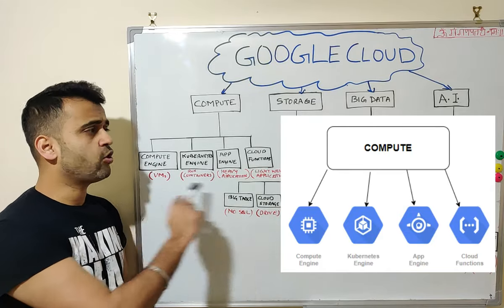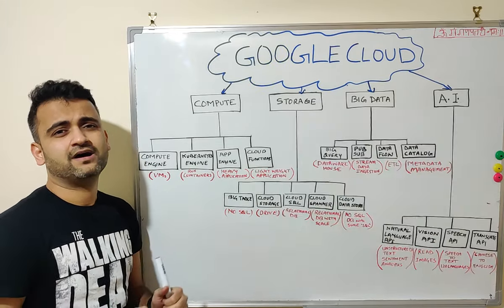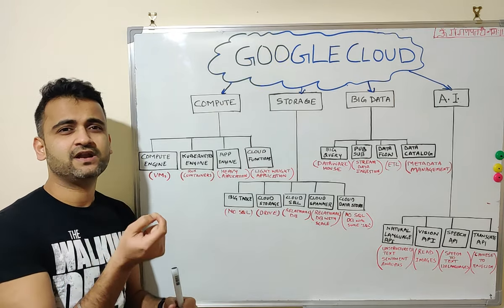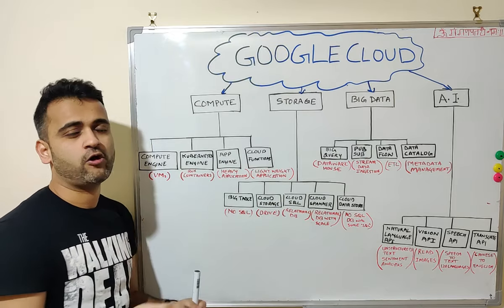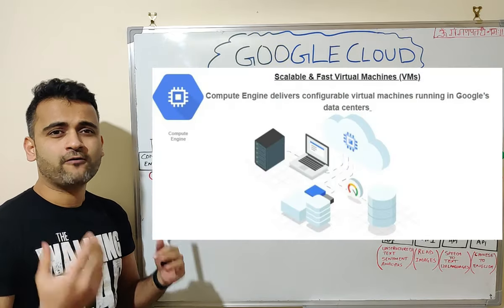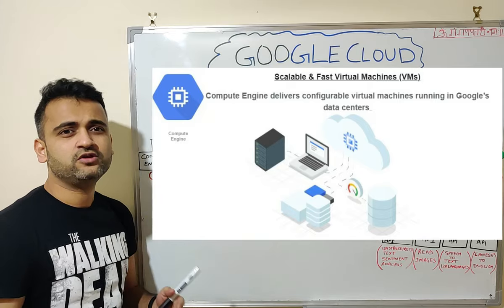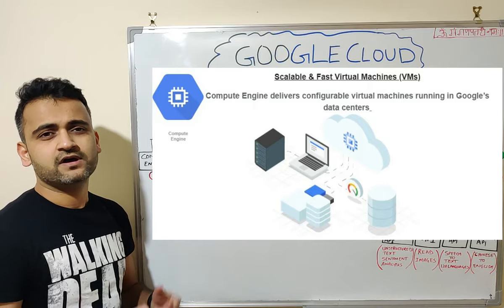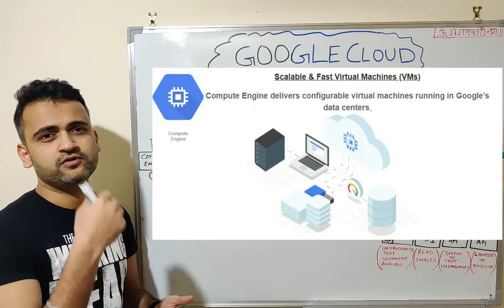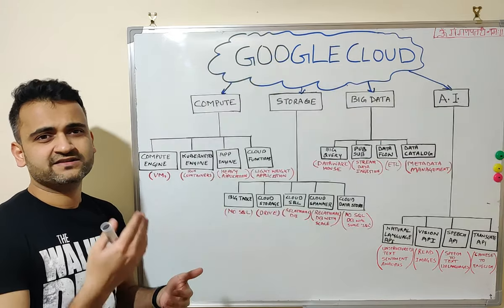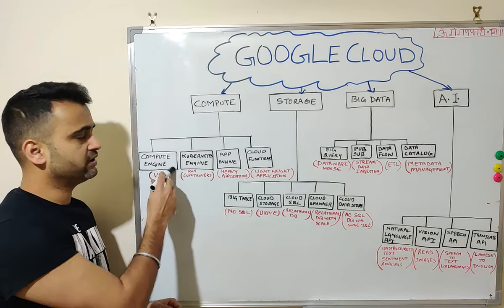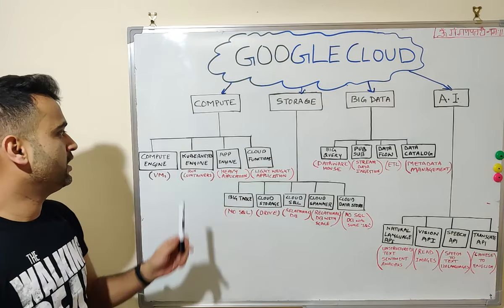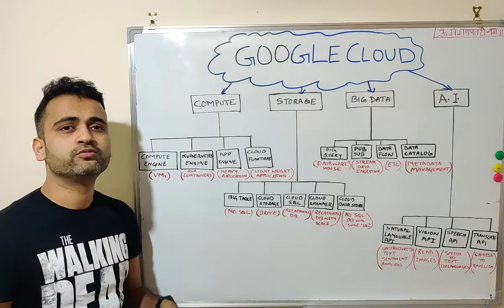Under Compute, we have four different major products. I have highlighted all these products with a key in red to give you a high-level context of what each offers. Compute Engine, as the name suggests, offers a platform to run your virtual machines and virtual servers on Google Cloud. If you have a server sitting in-house and want to deploy a similar server on Google Cloud, you would use Compute Engine.